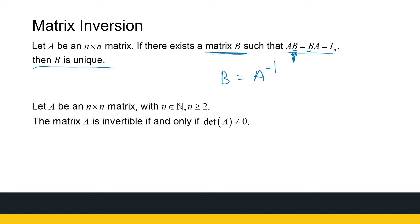If I can find that matrix, I can multiply it with A. So A times A inverse gives me the identity, and similarly A inverse times A also gives the identity. That's what the inverse matrix looks like. We'll get to how to find it, but that's how we define it.